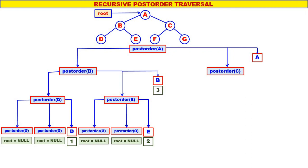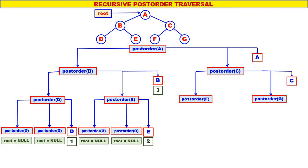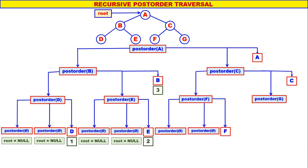Next we go to post_order(C). The left child of C is F, therefore post_order(F). Right child of C is G, therefore post_order(G), and we have to display C. In post_order(F), F is not equal to null. Left child of F is null, therefore post_order(null). Right child of F is null, therefore post_order(null), and we display F. F is the fourth to be displayed.